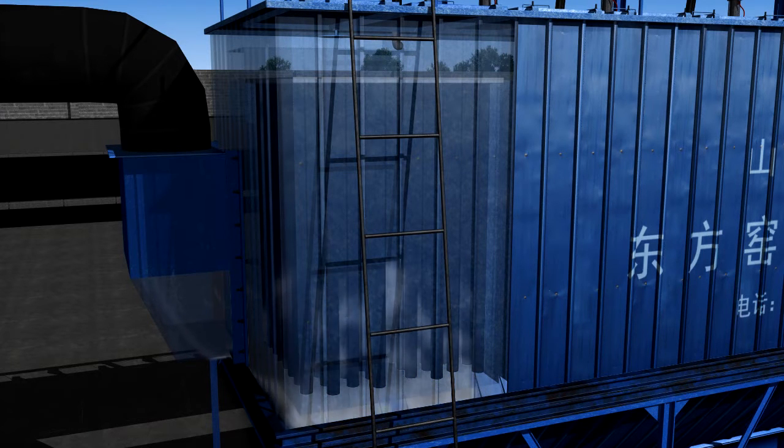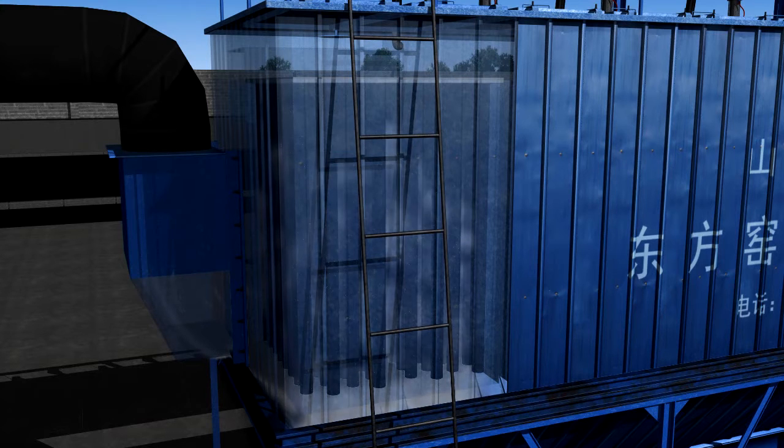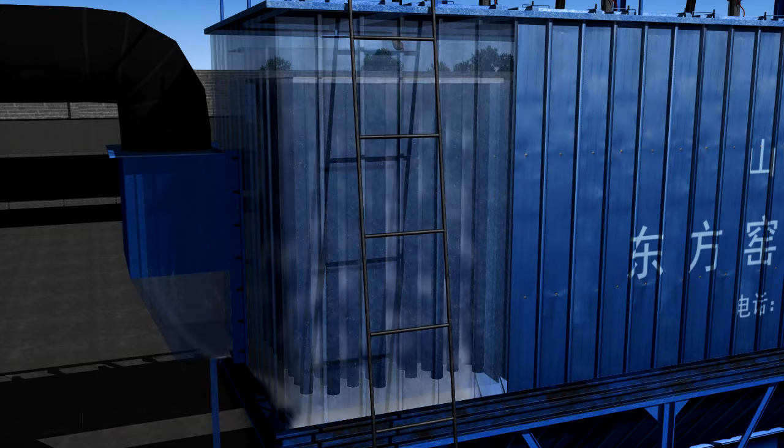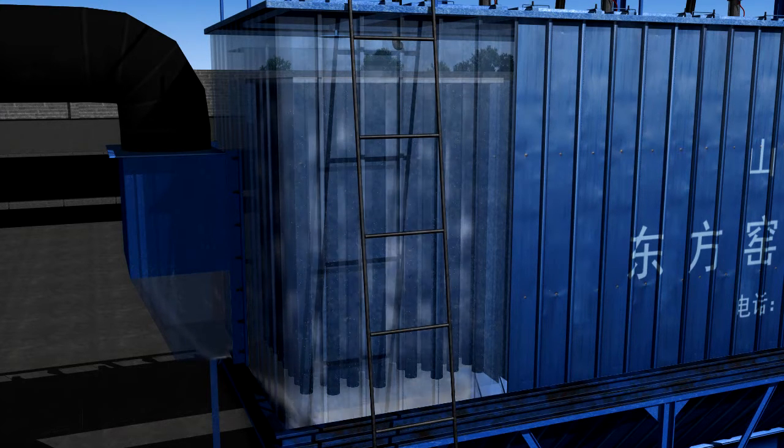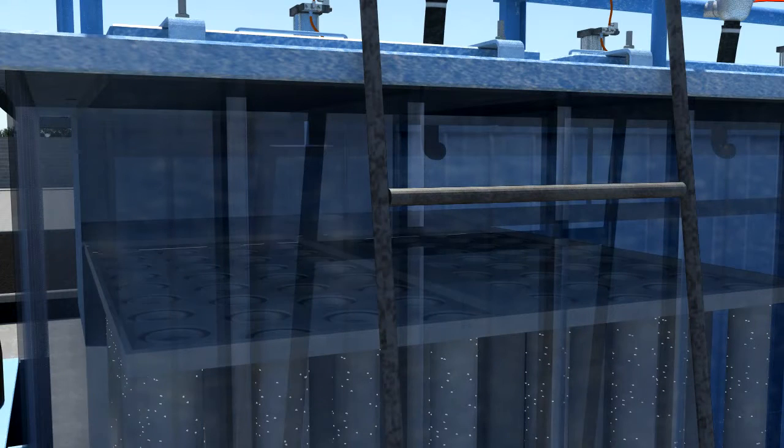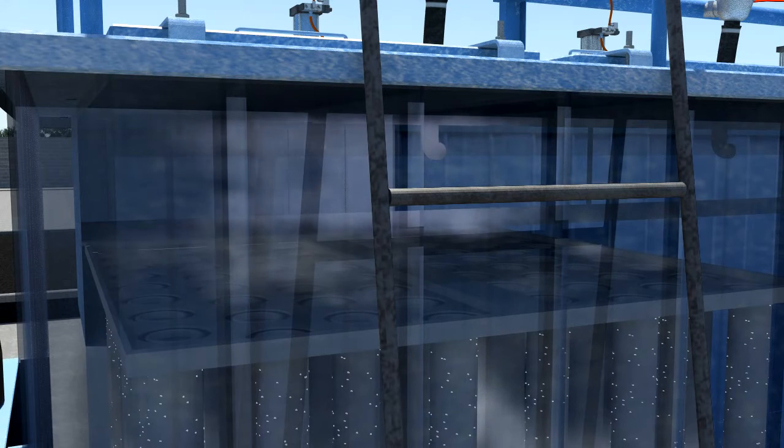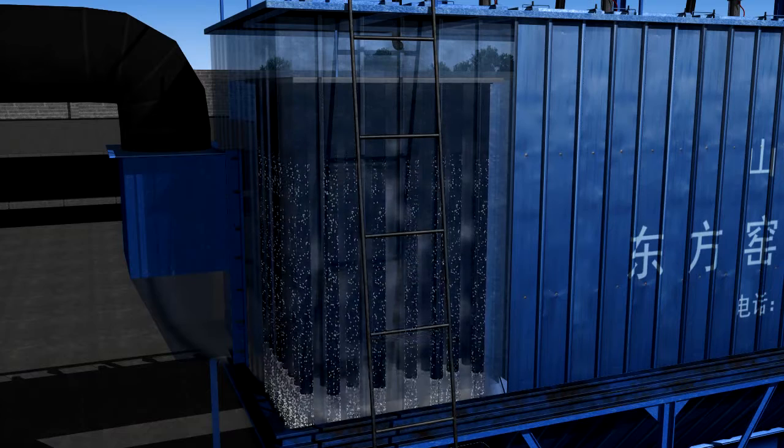The exhaust gas first goes through the cyclone dust removal. Dust in the exhaust gas will be separated out under the centrifugal effect. Then the remaining gas enters the high temperature bag filter. The small particles will be isolated out of the bag through filtration, then shaken off by injected gas from the pulse valve.